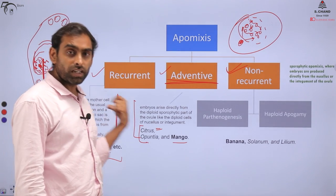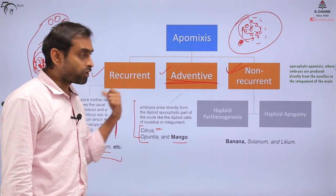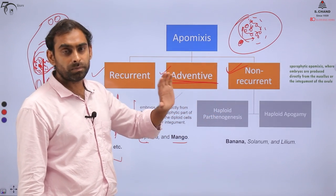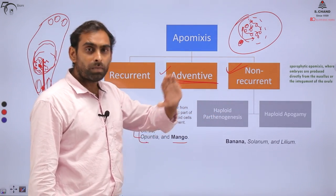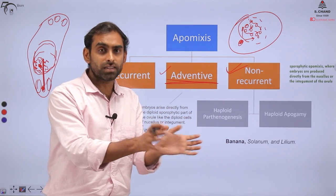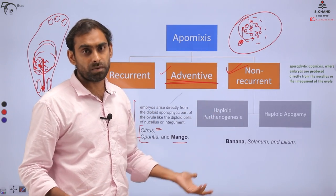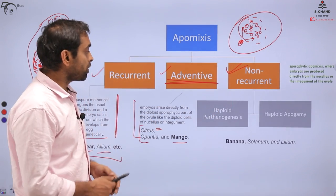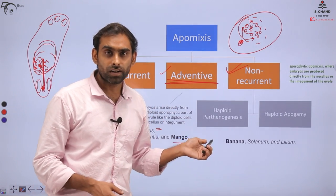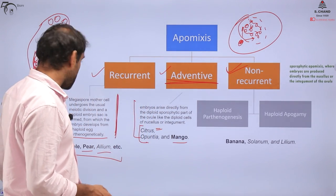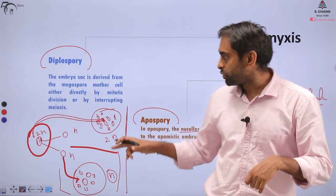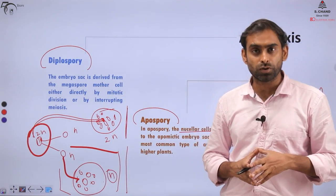This second classification can also fit into the first. Recurrent Apomyxis arises from direct mitotic division; Non-recurrent involves normal meiotic division followed by mitotic division of the final cells to make an embryo; and Adventitive can be considered as an example of Apospory, whereas the other two can be considered examples of Diplospory.